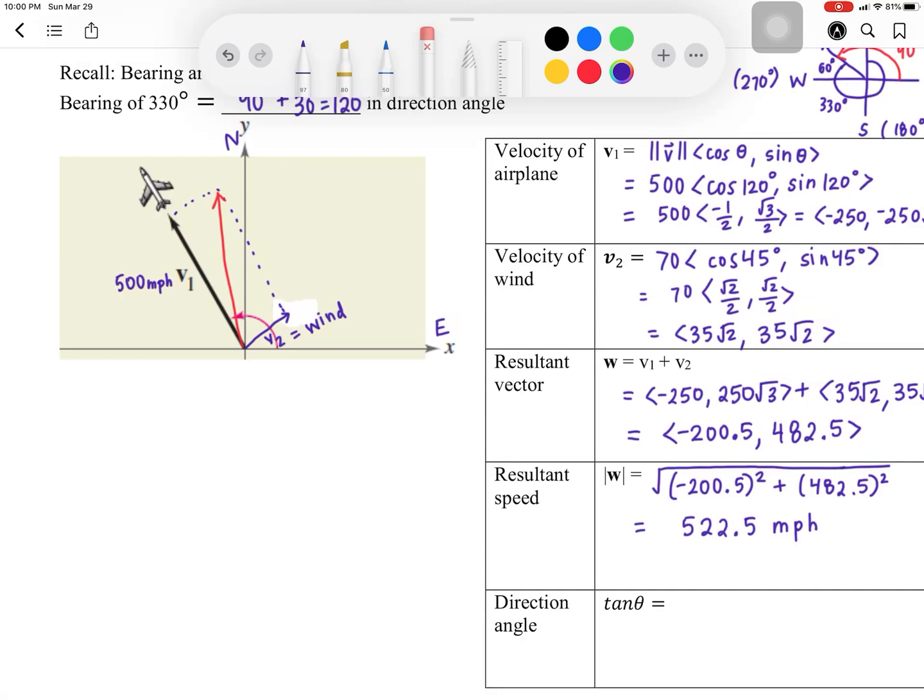I'm going to draw the resultant speed on a separate graph here. So here's your north-east axis. And this one is your resultant speed. And we go ahead and call that W. So here we have to find the direction angle. Remember that the direction angle is the one that measures from the positive x-axis. This has an x-component and a y-component.